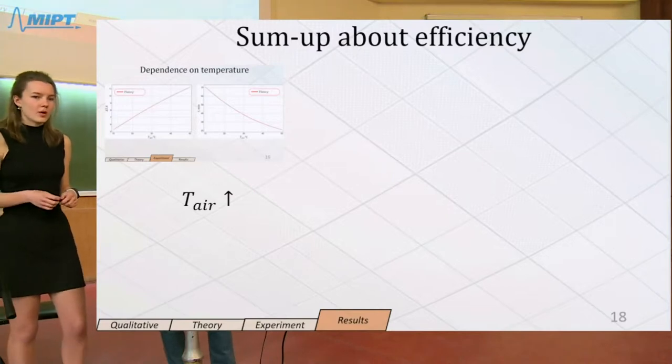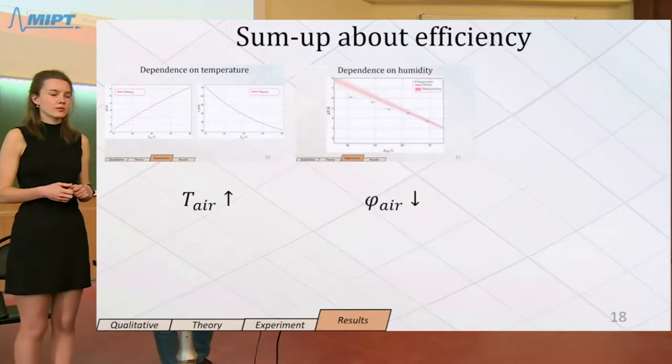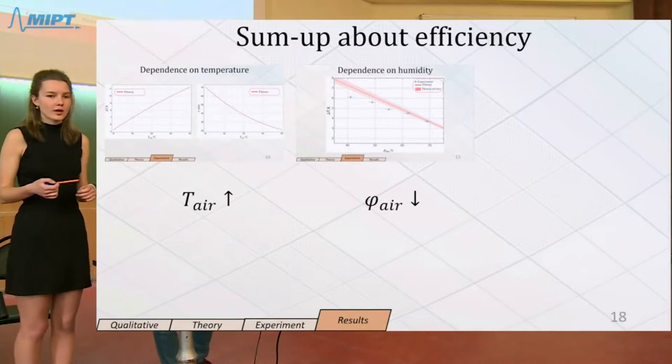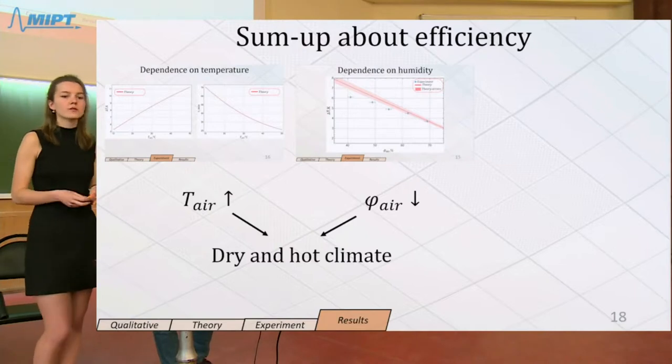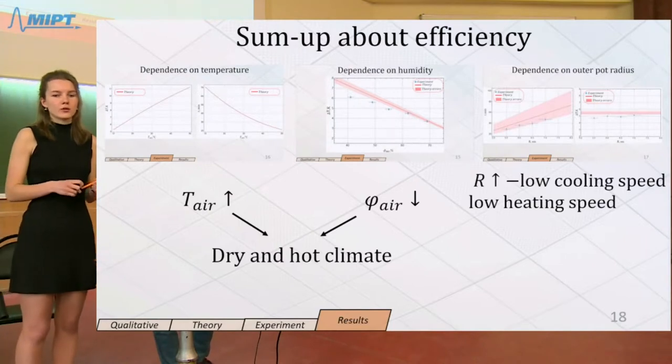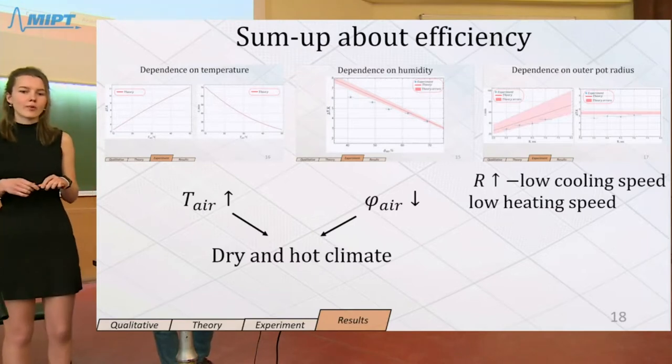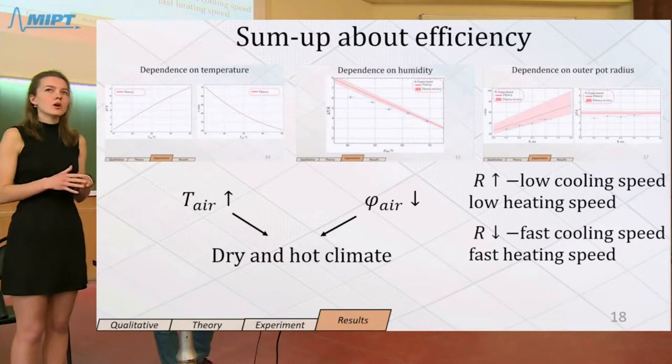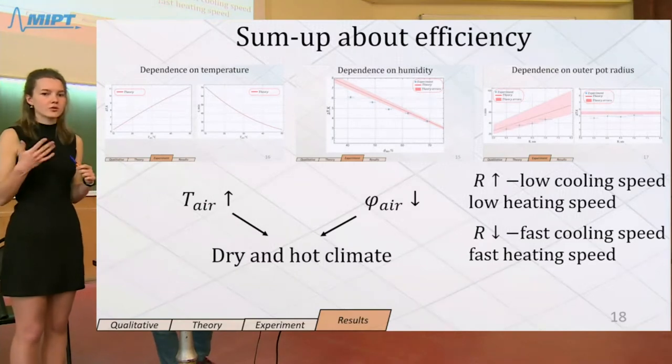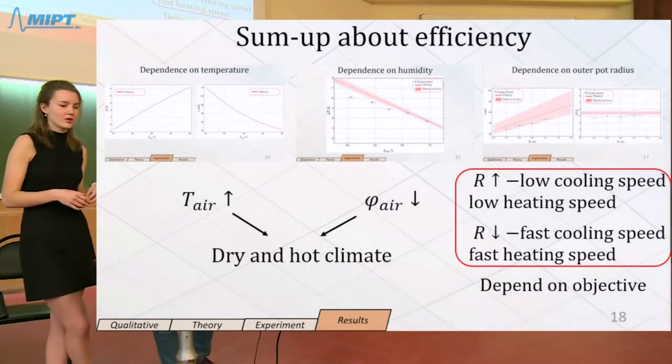Let's briefly sum up. The best conditions for evaporation are high temperature and low air humidity that could be achieved in dry and hot climate. The bigger pot radius gives lower cooling speed and also lower heating speed. So if you want to cool down your pot faster, you should use the pot with smaller radius.